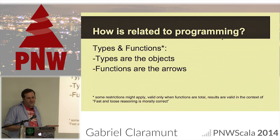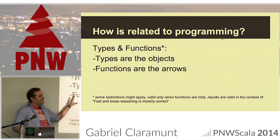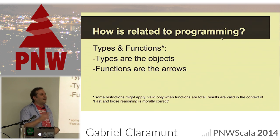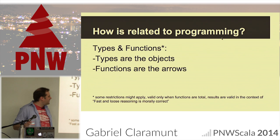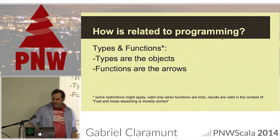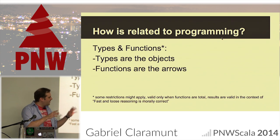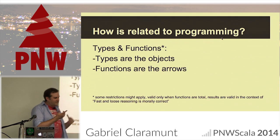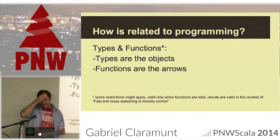Disclaimer: some restrictions may apply. This is valid only when the functions are total. Results are valid in the context of 'fast and loose reasoning' — morally correct. That means all this applies when you ignore things like exceptions, non-termination, and nulls. It's an ideal world of pure total functions. There is a paper called 'Fast and Loose Reasoning is Morally Correct' that does the hard work of mapping an ideal category to the real world and explaining why the results are still valid. That's why you sometimes hear about 'morally correct reasoning' in functional programming.